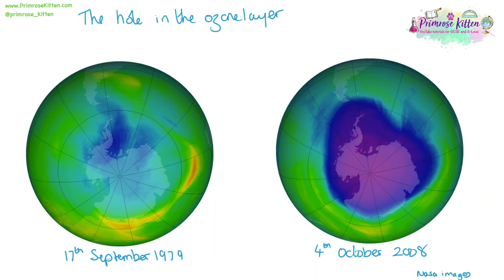Images from NASA show that there is a growing hole in the ozone layer — though it isn't very hole-shaped. This blue area we can see is the thinning of the ozone layer. This image is from 1979, and this one is from 2008, and we can see that the hole is getting larger — a massive increase from 1979 to 2008.